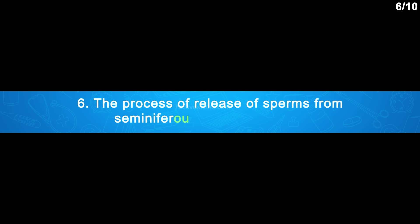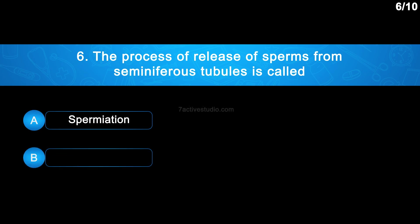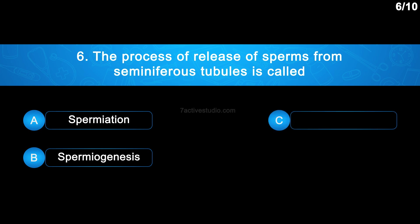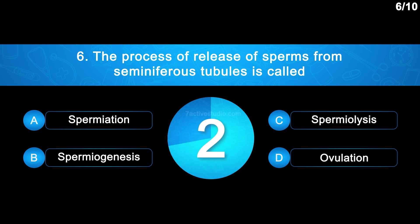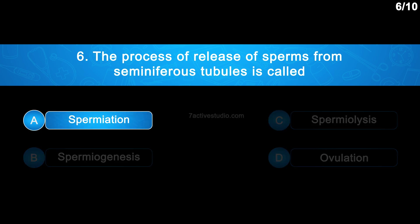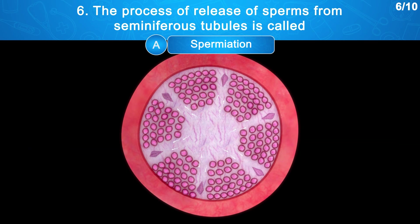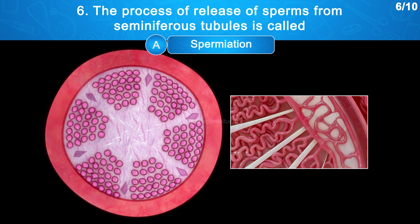Question 6: The process of release of sperms from seminiferous tubules is called — Option A: Spermiation. Option B: Spermiogenesis. Option C: Spermiolysis. Option D: Ovulation. The correct answer is Option A — spermiation. After spermiogenesis, sperm heads become embedded in the Sertoli cells and are finally released from the seminiferous tubules by the process called spermiation.